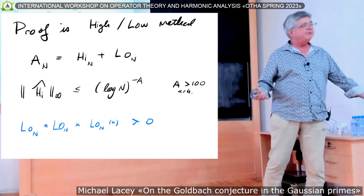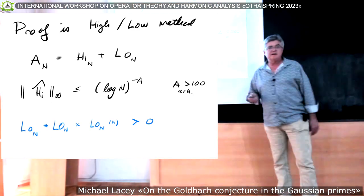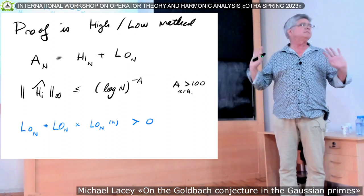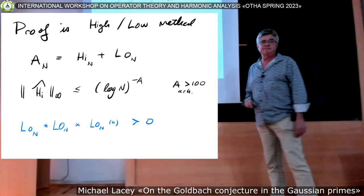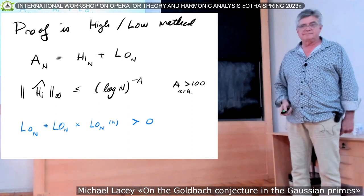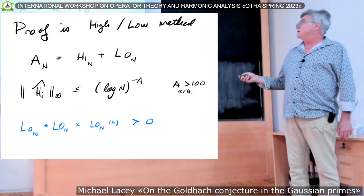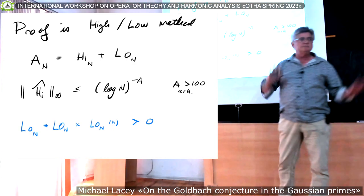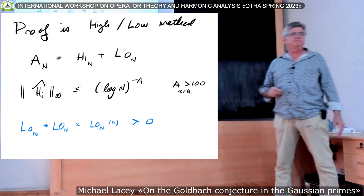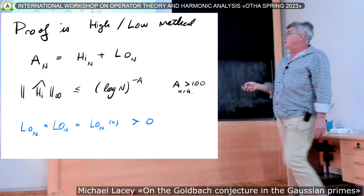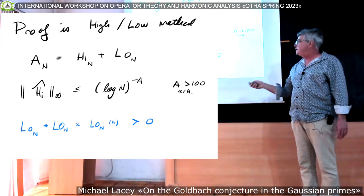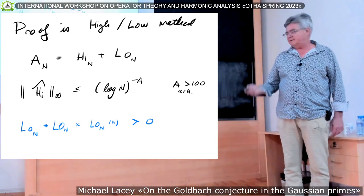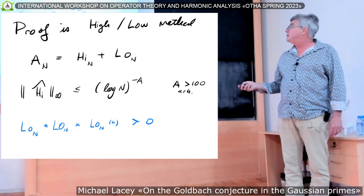All right, so the proof is high frequency, low frequency. Namely, you write your averaging operator, and here I don't have the omega, but it's understood. And we rewrite it as two pieces, a high frequency and a low frequency. The high frequency, we just apply Plancherel, and obtain some decay like this, where a can be any large number, which I won't choose to specify. And then the low term, you can directly estimate it, its convolution, and check the positivity condition you need.